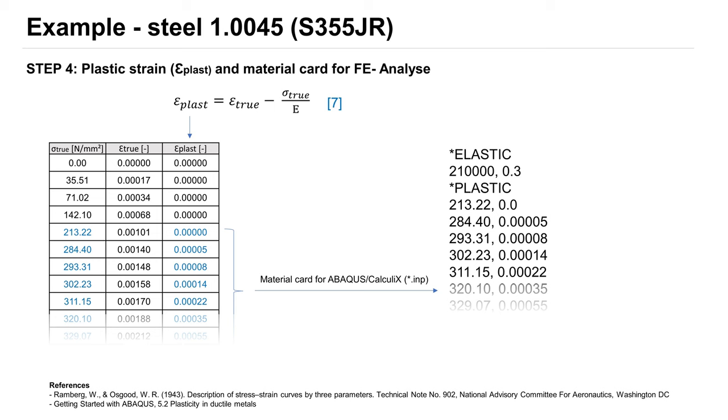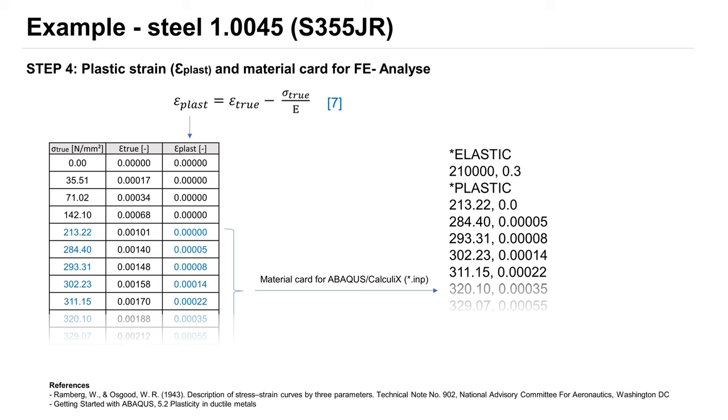And in the last step we calculate plastic strain and create a material card for FEM software. Using Formula 7 we calculate plastic strain. On the right side you can see material keywords for Abaqus or Calculix: Elastic with E-Modulus and Poisson ratio, and Plastic with true stress and plastic strain.